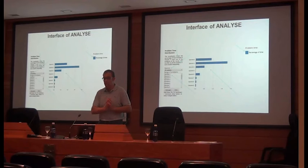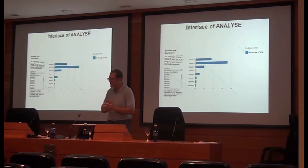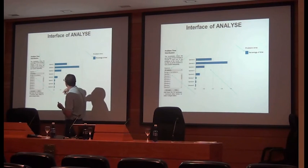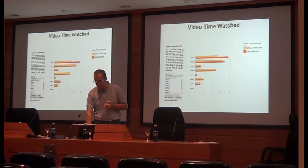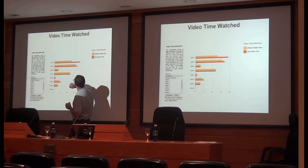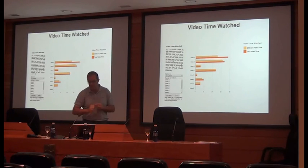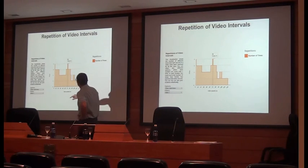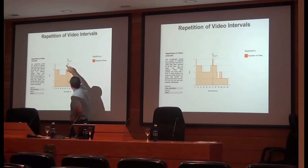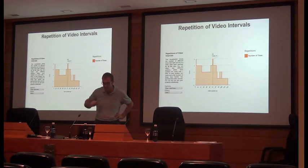Let me show you some examples of this tool. This is the general interface. You can see the different exercises on the course and the percentage of time that the class average or a specific student has spent on each exercise. This is about student grades and video watch time — one bar shows total video time, while the other shows total video time in different pieces of the video. This way you can detect areas where students repeat a lot or areas where videos are not watched.